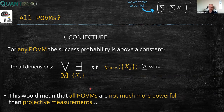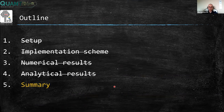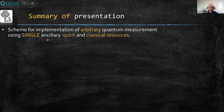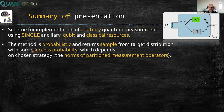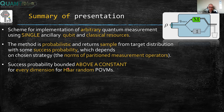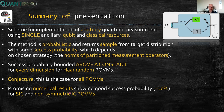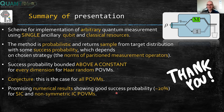We already know this is the case for generic random POVMs, which is an indicator that it might hold for all POVMs. To summarize: I described a scheme for implementation of arbitrary quantum measurements using only a single ancillary qubit and classical resources. The method is probabilistic and returns a sample from the target distribution with some success probability, which depends on the chosen partitioning strategy and can be expressed as norms of partitioned measurement operators. The success probability is bounded above a constant for every dimension for Haar-random POVMs, motivating our conjecture that this holds for all POVMs, supported by promising numerical results for SIC-POVMs and non-symmetric IC-POVMs. Thank you very much for your attention.